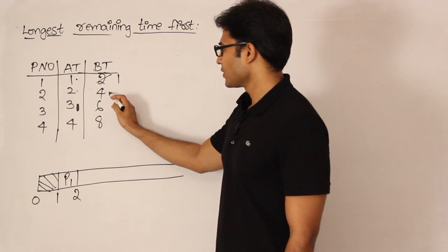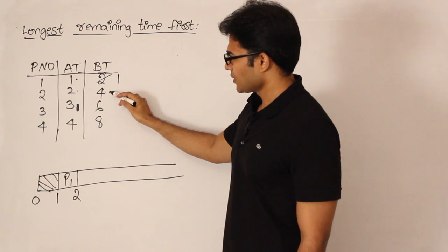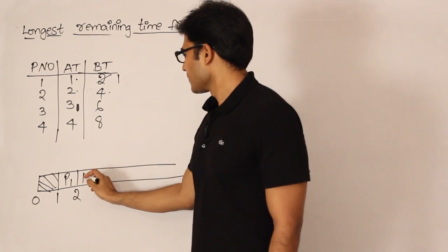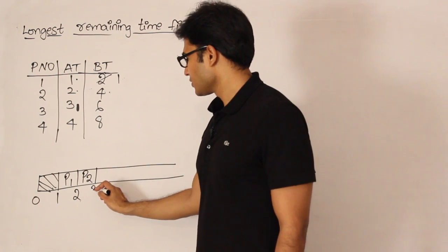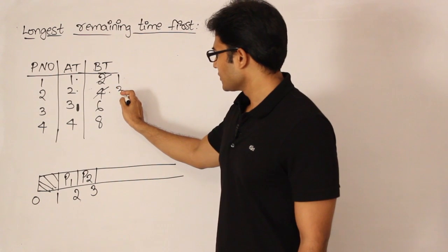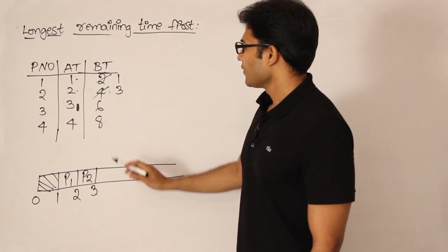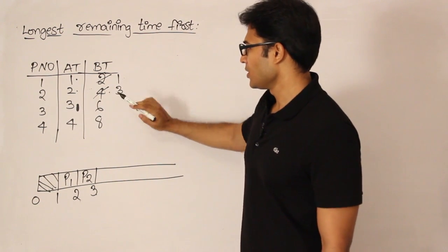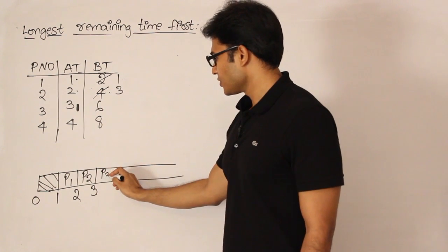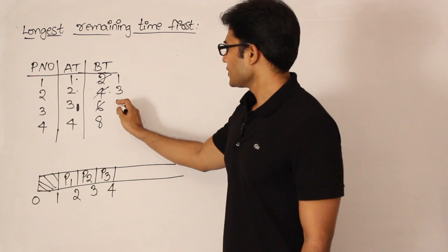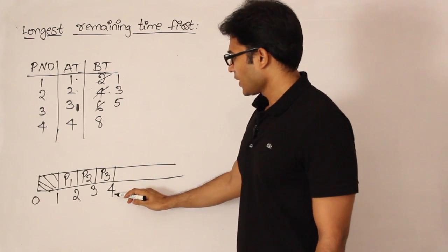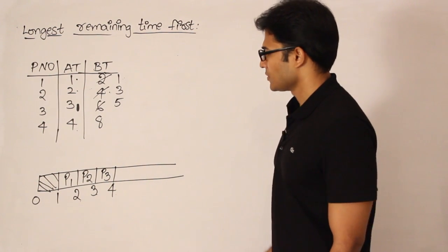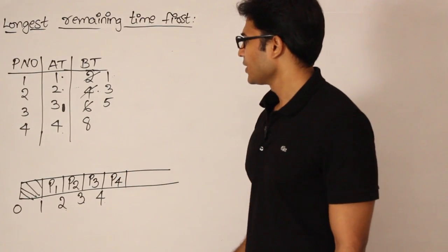At time t=2, P2 is also available with burst time 4. Among the remaining burst times 1 and 4, clearly 4 is longer, so P2 gets scheduled and runs for one unit, making its remaining burst time 3. At time 3, P3 is also available — all three processes have burst times to compare, and the longest is P3, so P3 gets scheduled for one unit. At time 4, all processes have arrived, and the longest is P4, so P4 is scheduled next.